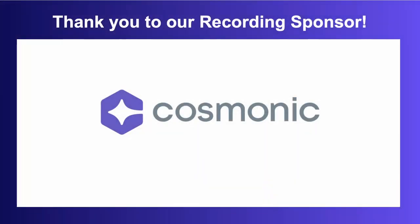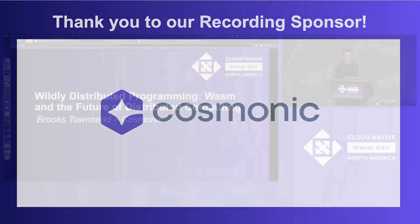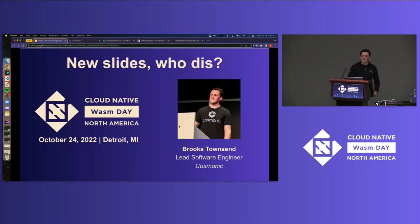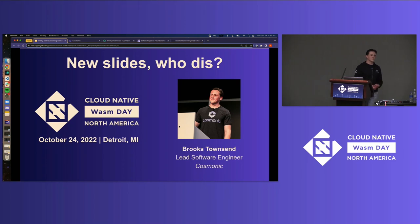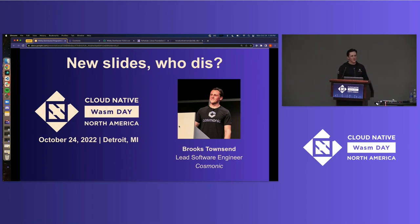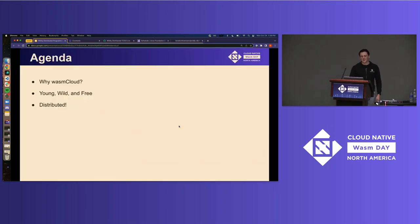All right, everyone. Hello. Welcome to Wildly Distributed Programming, Wasm and the Future of Distributed Computing. My name is Brooks Townsend. I'm a lead software engineer at Cosmonic, and I've also been a maintainer for the open source project Wasm Cloud for the past two-ish years now. I love programming in Elixir, Rust, and WebAssembly, which puts me in a really interesting Venn diagram of programmers — serial open source contributor and, of course, a demo enthusiast, always going to do a live demo when I talk at a conference.